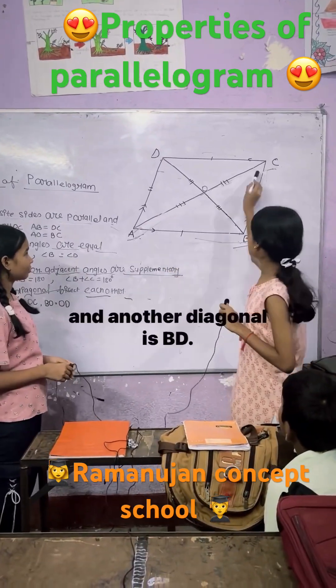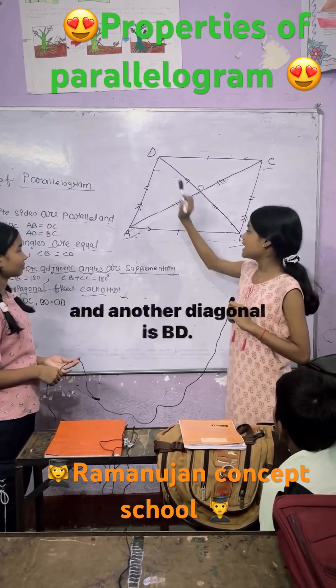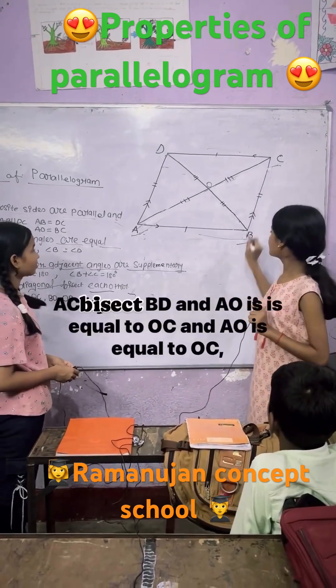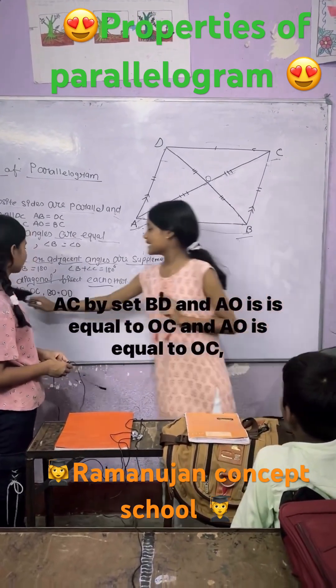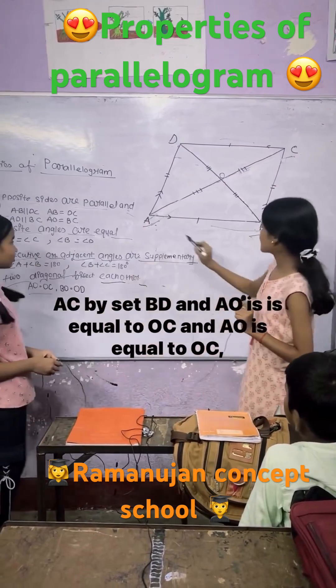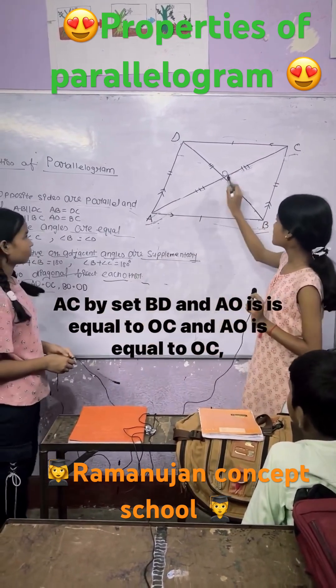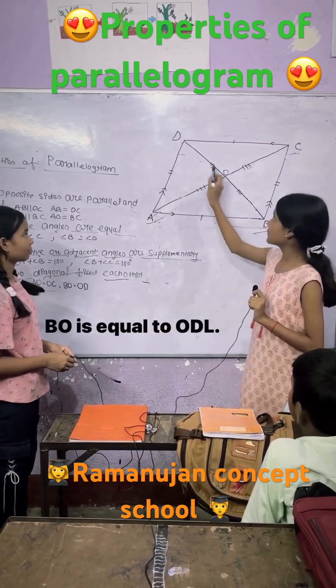The fourth property: the two diagonals are AC and BD. AC bisects BD, meaning AO is equal to OC and BO is equal to OD.